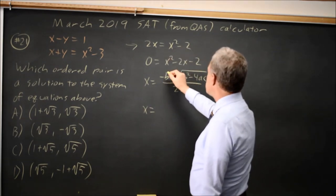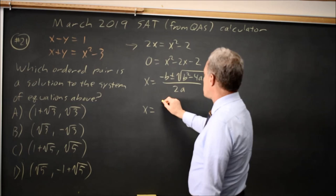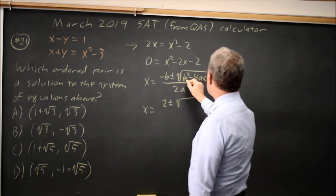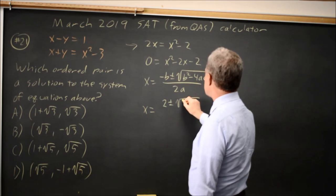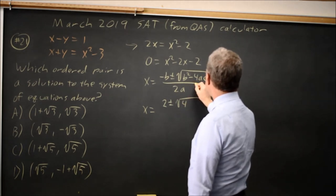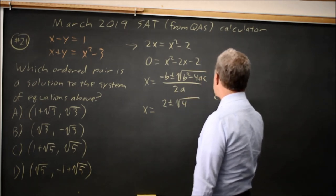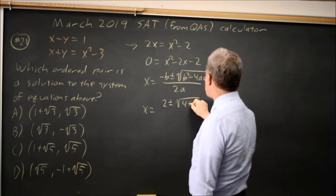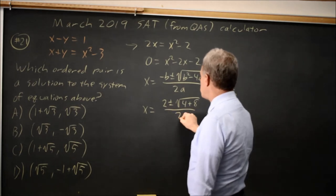So x equals substituting these in. Negative b is minus negative 2 is positive 2 plus or minus square root. b squared is negative 2 squared is 4 minus 4ac. Negative 4 times negative 2 is positive 8 times 1 is still positive 8 all over 2.